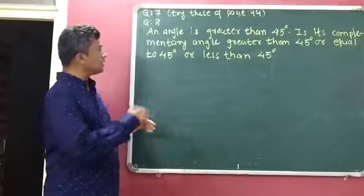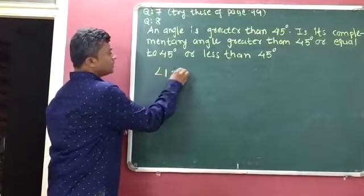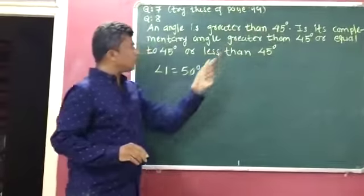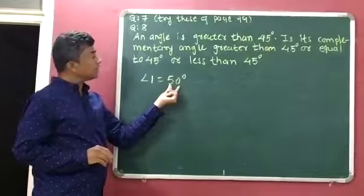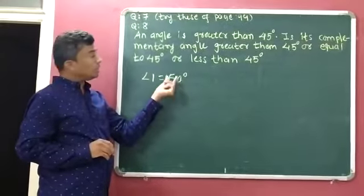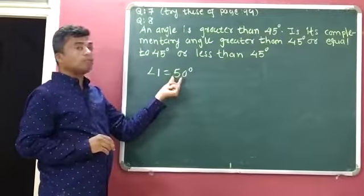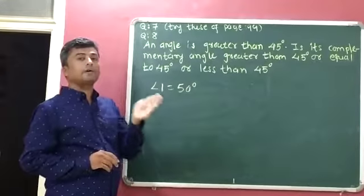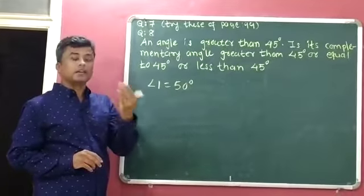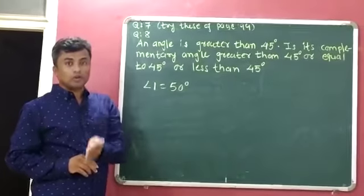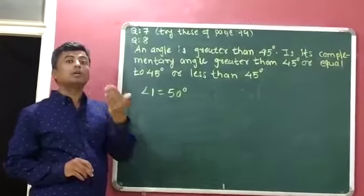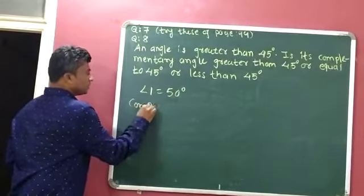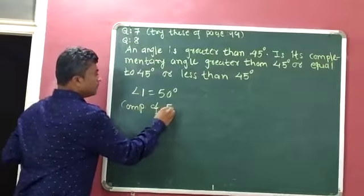Now I will consider angle 1 is equal to 50 degrees. Since 50 degrees is greater than 45 degrees, I will identify the complement of 50 degrees and then check whether the identified complementary angle is greater than, less than, or equal to 45 degrees.